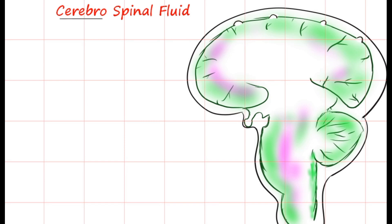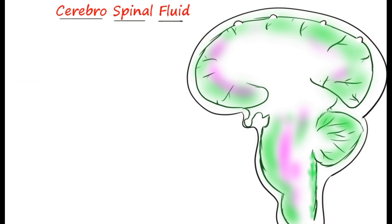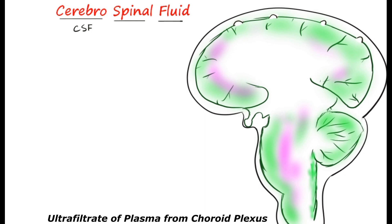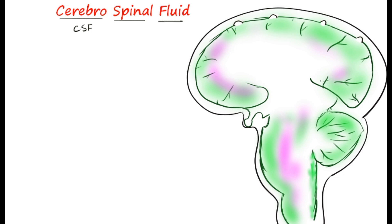Cerebrospinal fluid. The name itself suggests that the fluid is present in the cerebrum as well as the spinal cord. The fluid is known as CSF and is an ultrafiltrate of the plasma from the choroid plexus of the lateral ventricle and other areas of the brain.